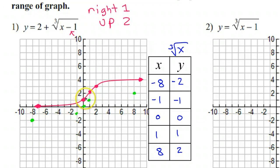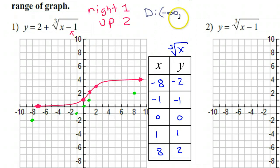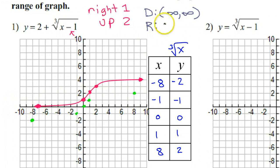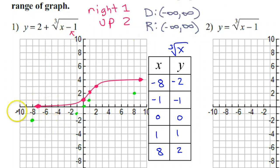Draw the curve through those shifted guide points — that is number 1. All of these problems have the same domain and range. The domain is negative infinity to positive infinity because the graph goes left and right forever, and the range is also negative infinity to positive infinity because it goes down and up forever.